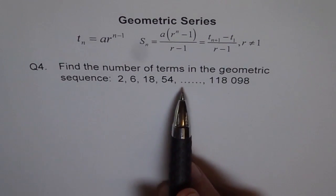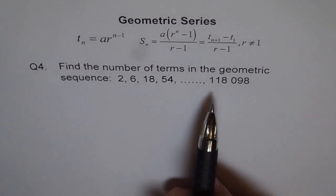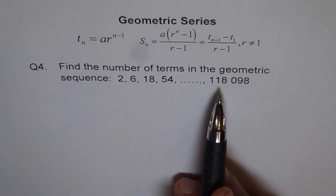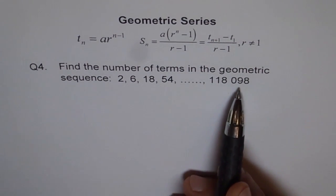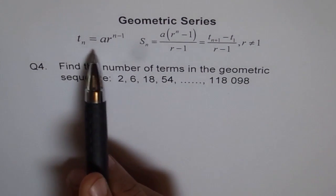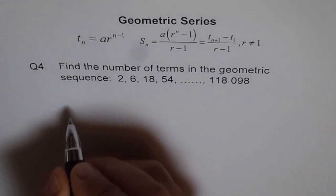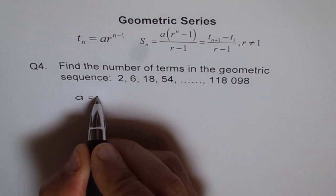Find the number of terms in the geometric sequence 2, 6, 18, 54 and the last term is given to us, the nth term, 118,098. So the formula to use here is tn equals to a times r to the power of n minus 1. Here, what is a for us? We say a is equals to 2.